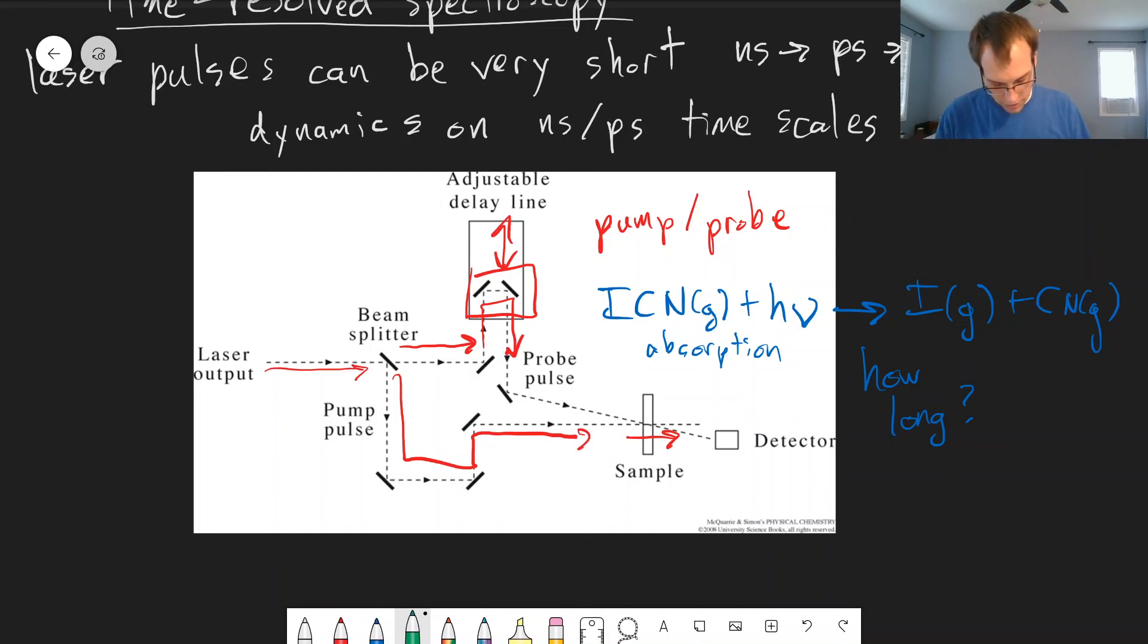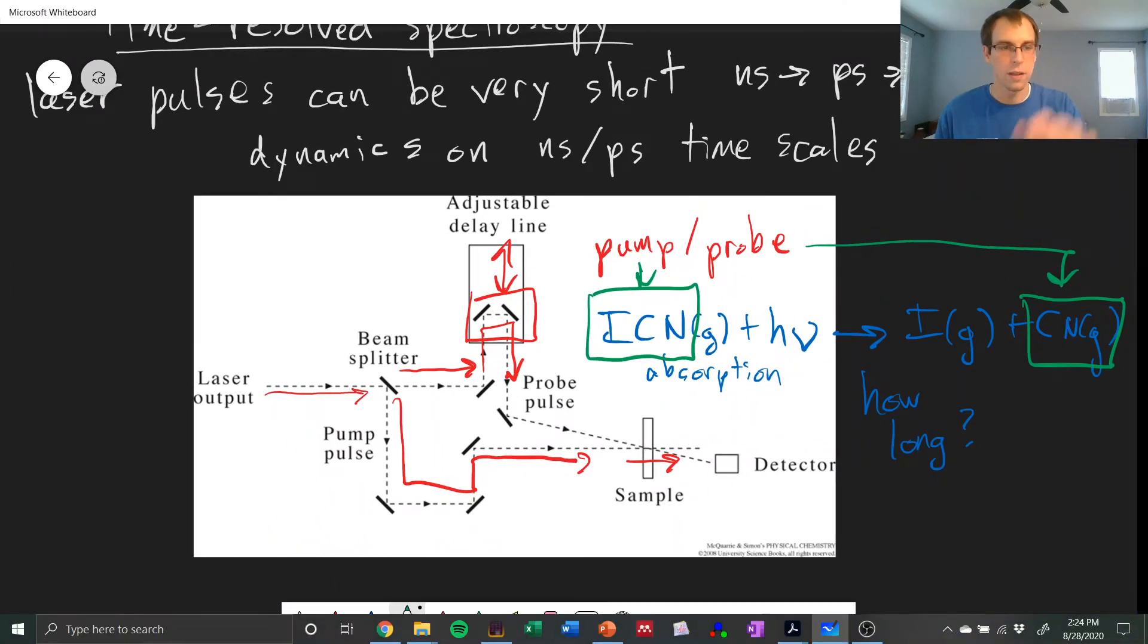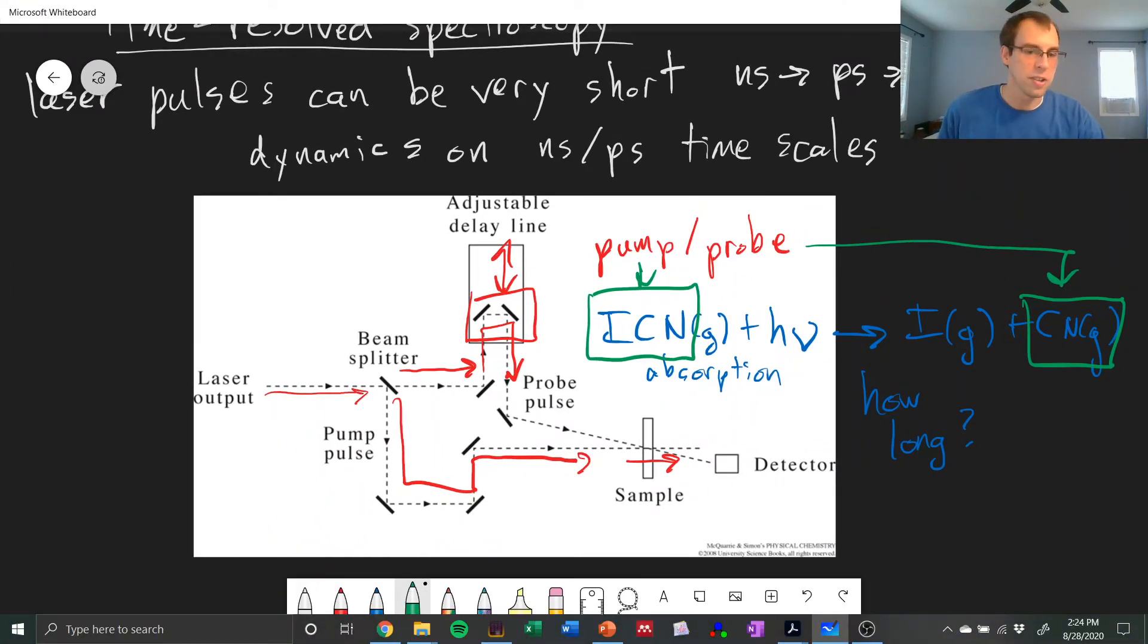We send our pump pulse in to excite the ICN molecule, and then our probe pulse measures one of the products, in this case, cyanide gas. So we can pump that dissociative transition and then measure the actual production of the cyanide gas.